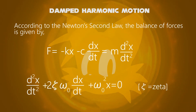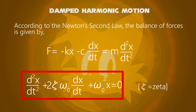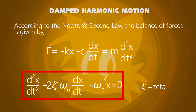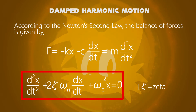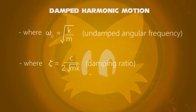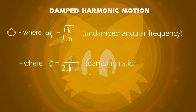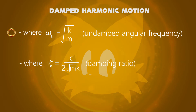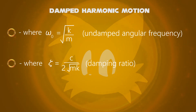We can rewrite this as: d²x/dt² plus two times zeta and omega naught times dx/dt, plus omega naught squared times x, equals zero. Where omega naught is the undamped angular frequency of the oscillator, equal to the square root of k over m. And zeta, called the damping ratio, equals c divided by 2 times the square root of mk.